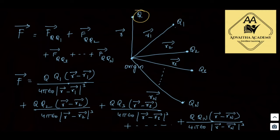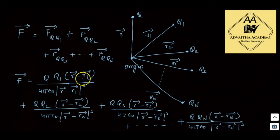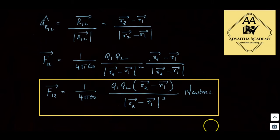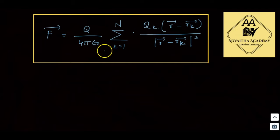For n charges, the total force on q is: force of q on q1 + force of q on q2 + force of q on q3 + … + force of q on qn. Each term follows the same Coulomb's law formula: q·qk · (r-bar − rk-bar) / [4πε₀ · |r-bar − rk-bar|³]. This is the total force due to charge q on n charges located at positions r1-bar through rn-bar.